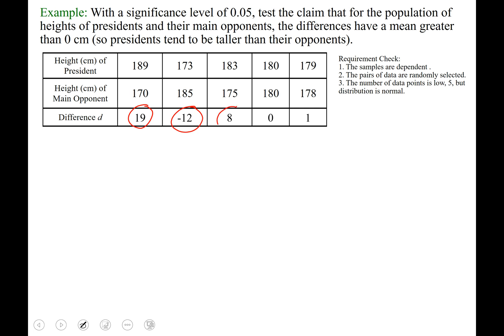183 minus 175 is positive 8. This paired value, both the president and the main opponent, were the same height, so 180 centimeters each,